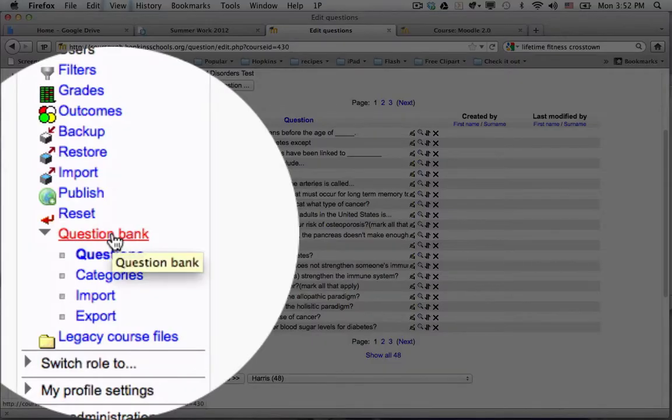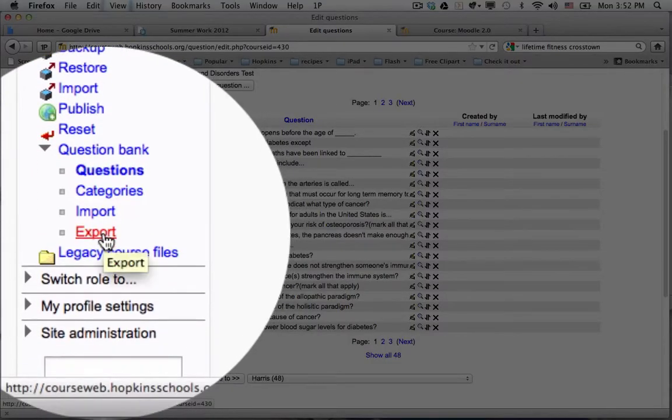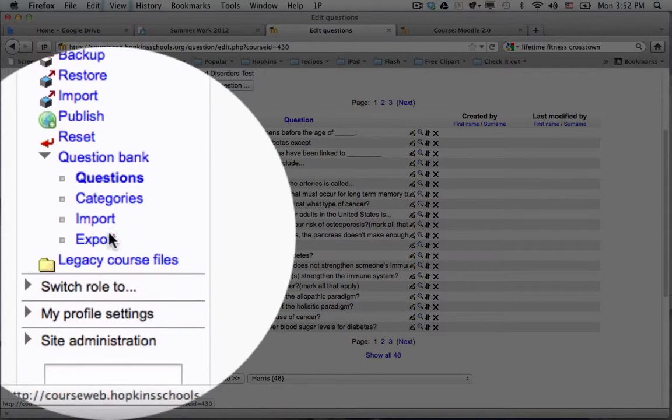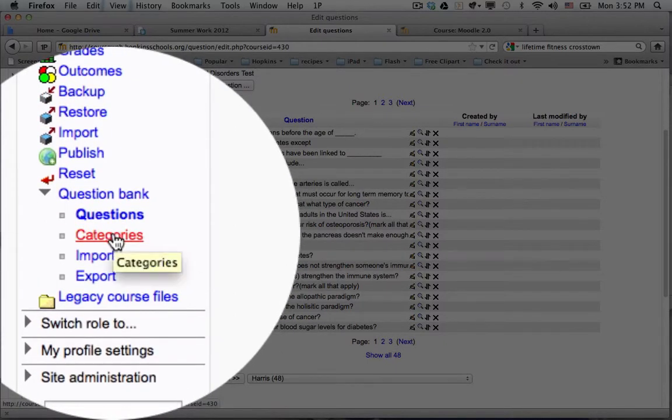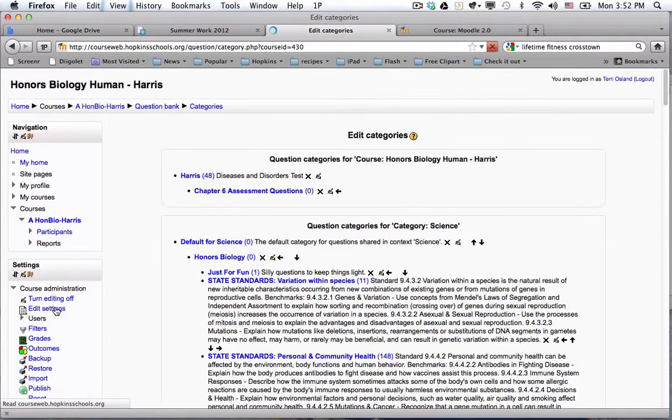So I clicked on question bank and then you can see that I have questions, categories, import and export. I want to look right into the categories. So when I click on that...